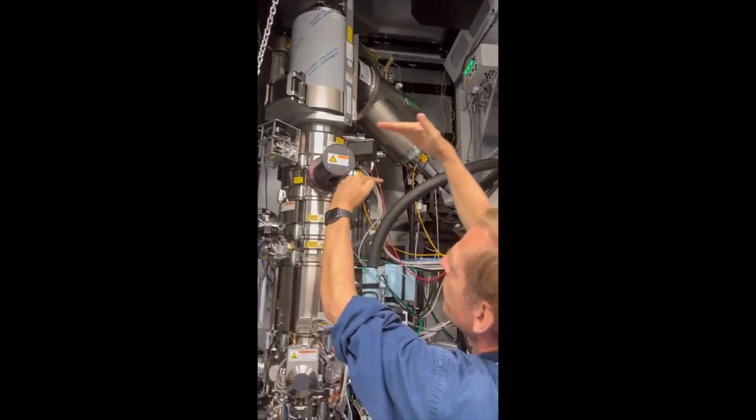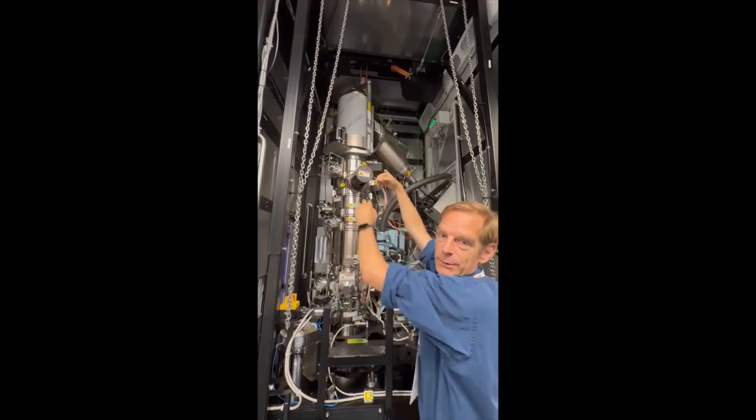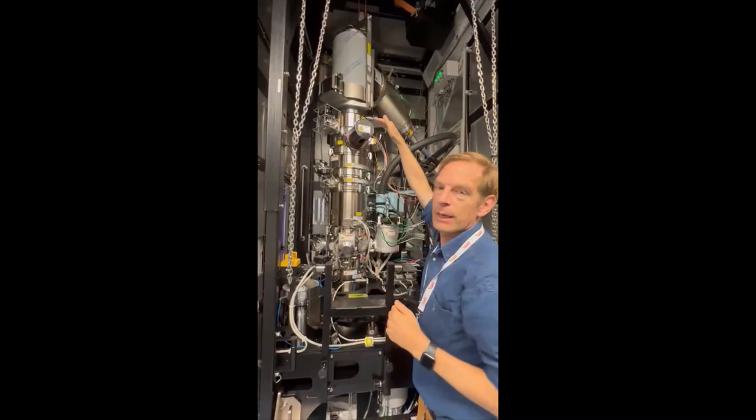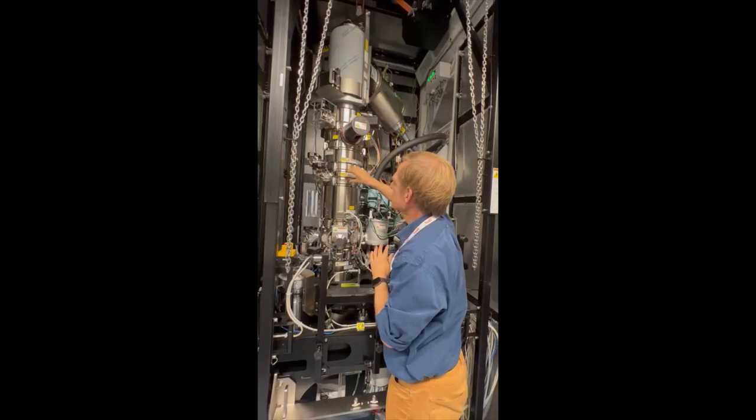The electrons sit there and then you have 300,000 volts. Electrons are negative and they don't like negative, they want to go to the positive. So the rest of the microscope is at ground potential and the top is at minus 300,000 volts, so the electrons start flying down. They go to half light speed and fly down in the middle of this vacuum.